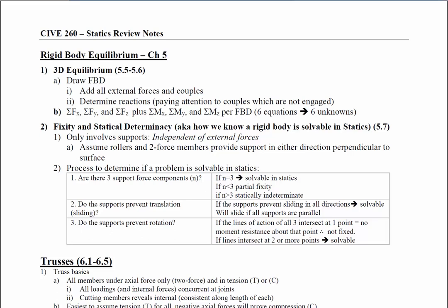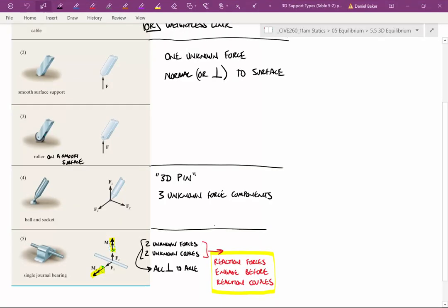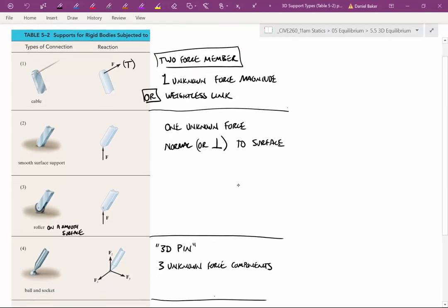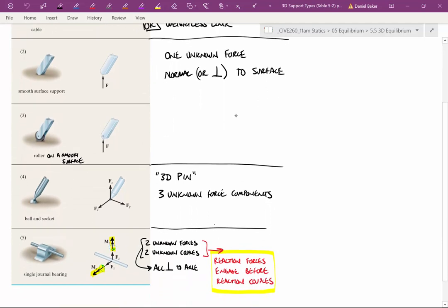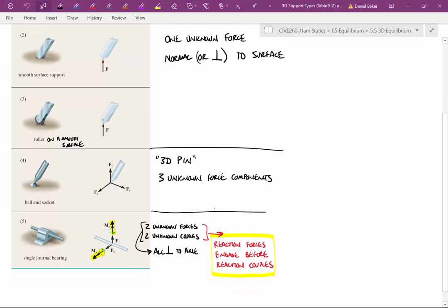The free body diagram does need to include all external forces and couples. As you're developing that free body diagram, another important thing to add is your reactions from our reaction table that we talked about here in class. A lot of the reactions are fairly straightforward: two force members, normal forces from smooth supports, rollers, a ball and socket with three forces and no moments.